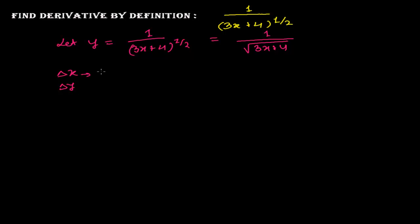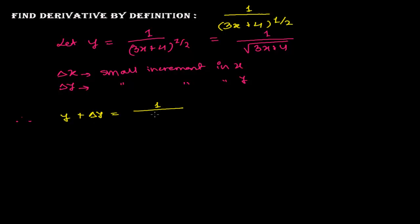Let δx and δy be the small increments in x and y. Therefore my function turns into: y + δy = 1 divided by √(3(x + δx) + 4). In the next step I will isolate δy on one side and move the rest to the other side.